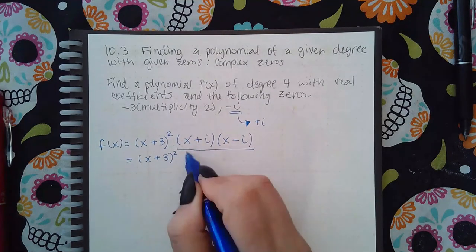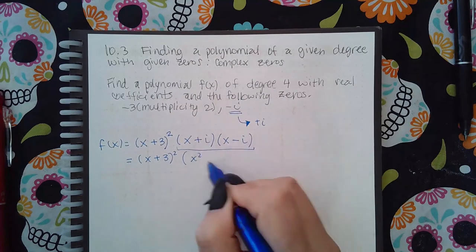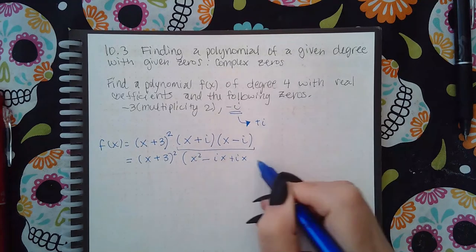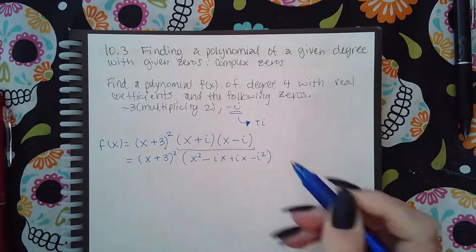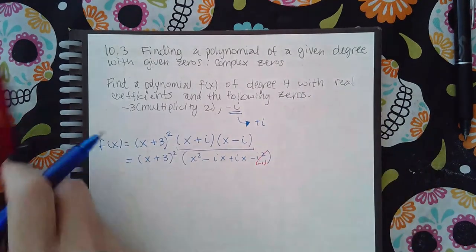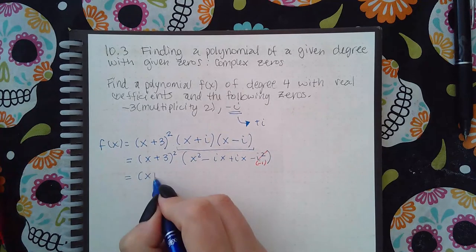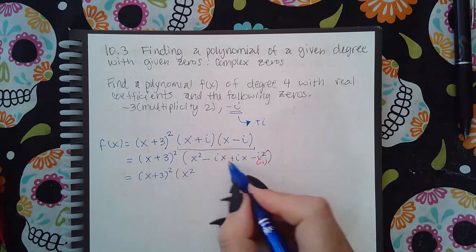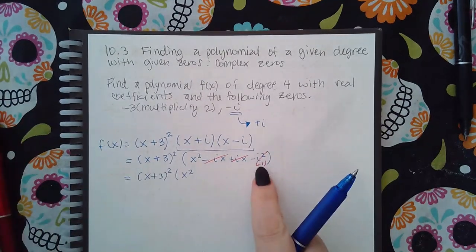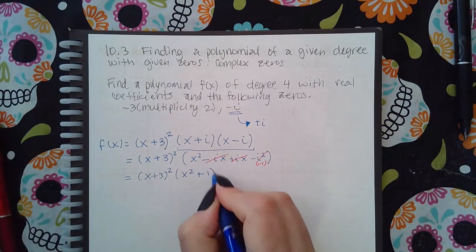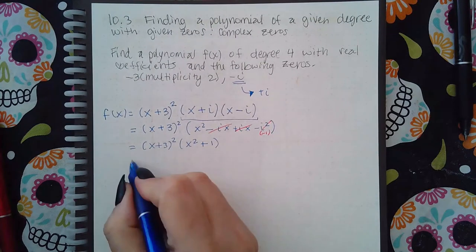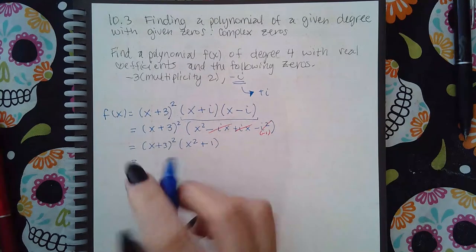So when I do this I'm gonna get (x+3)² times (x²-ix+ix-i²). Now remember that i² is negative one, so you get (x+3)²(x²). These guys will actually cancel, and a negative of negative one is actually plus one. Before I can multiply these two out, I actually have to multiply the square out.